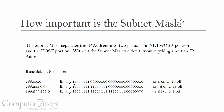So with a subnet mask of 255.0.0.0, we would have eight ons and 24 offs. These are pretty basic subnet masks. We have lessons later on subnetting and special tools, but right now let's keep to the three basic subnet masks most of us see day-to-day. A subnet mask of 255.255.0.0 would be 16 ons and 16 offs. And a subnet mask of 255.255.255.0 would be 24 ons and 8 offs.